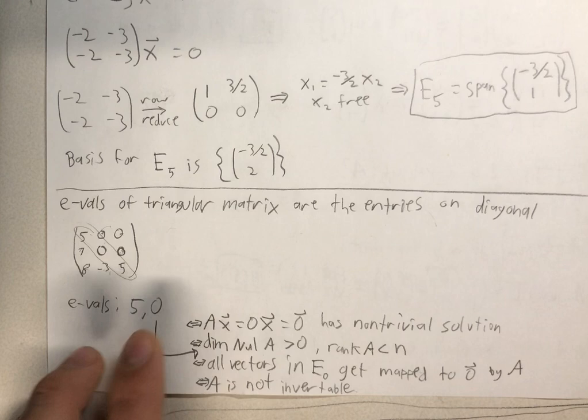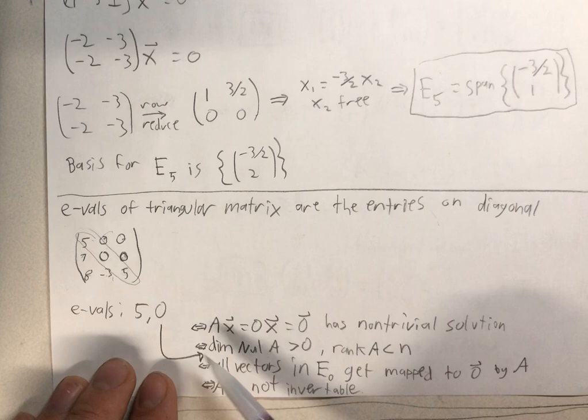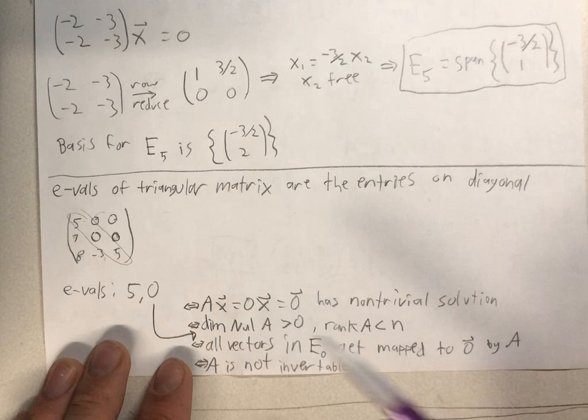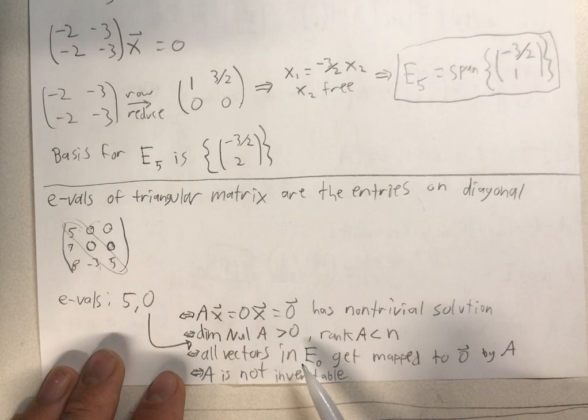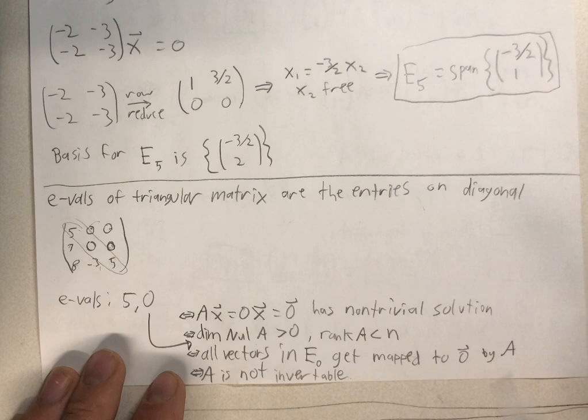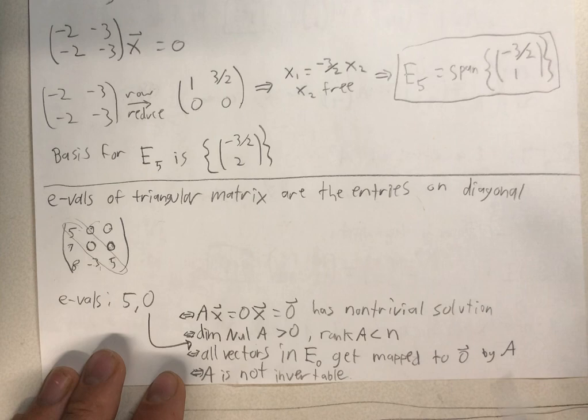Now, if a matrix has an eigenvalue of 0, that's the same thing as saying that A times 0X equals the 0 vector has a non-trivial solution. Or it's the same thing as saying the dimensions of the null space of A are greater than 0, and the rank of A is less than n. Which is the same thing as saying that all vectors in the eigenspace associated to 0 get mapped to the 0 vector by A. Which is the same thing as saying A is not invertible.